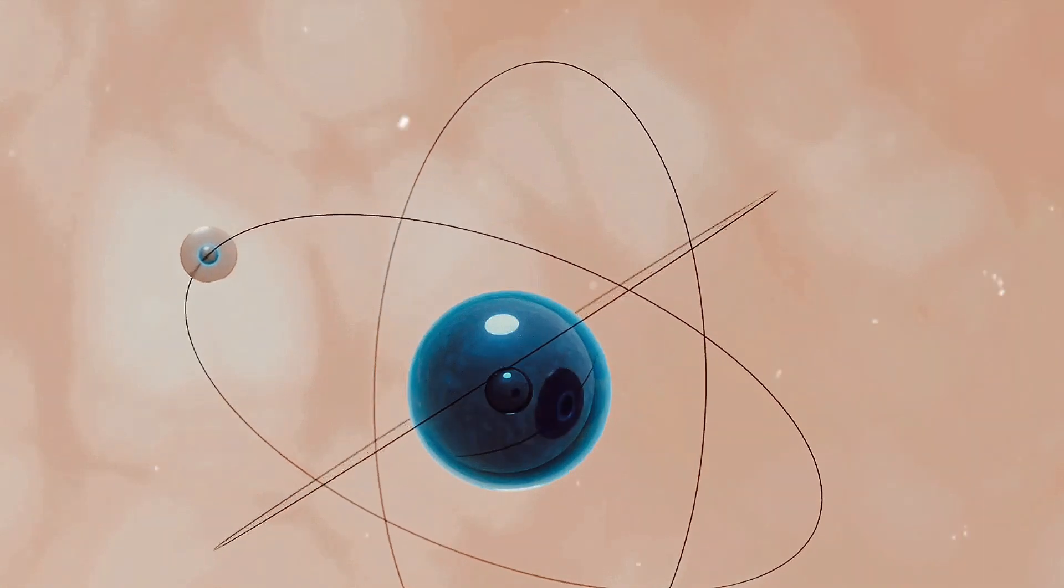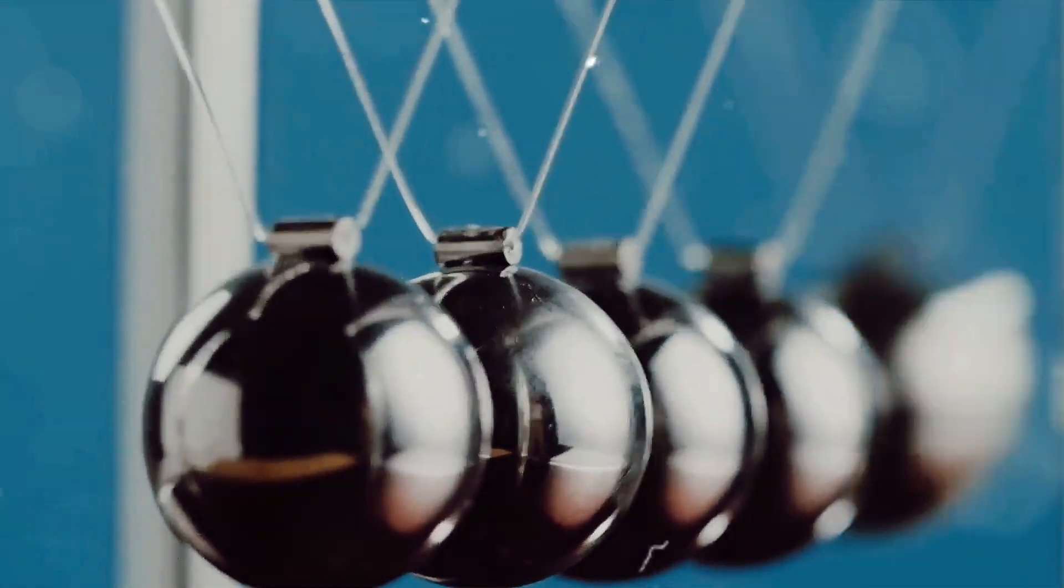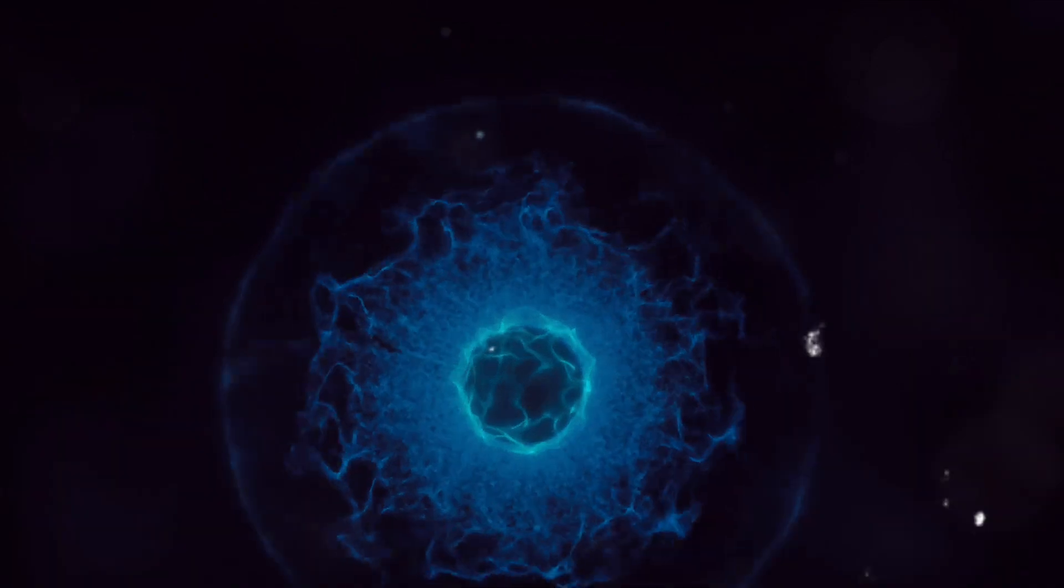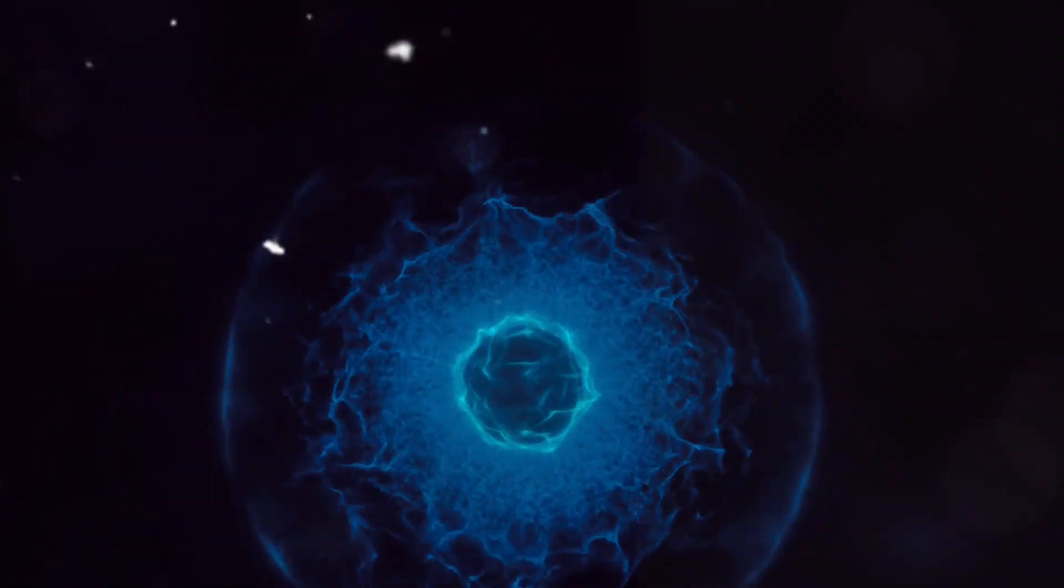Now, electrons, being negatively charged, have a natural tendency to repel each other. This is due to the fundamental principle that like charges repel. When you place your hand on a desk, the electrons in the atoms of your hand are repelling the electrons in the atoms of the desk. This repulsion creates a kind of invisible barrier that prevents your hand from passing through the desk.